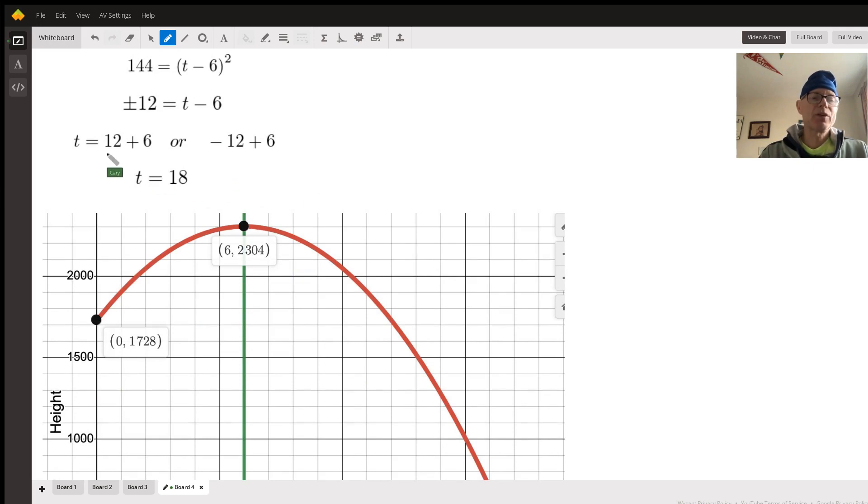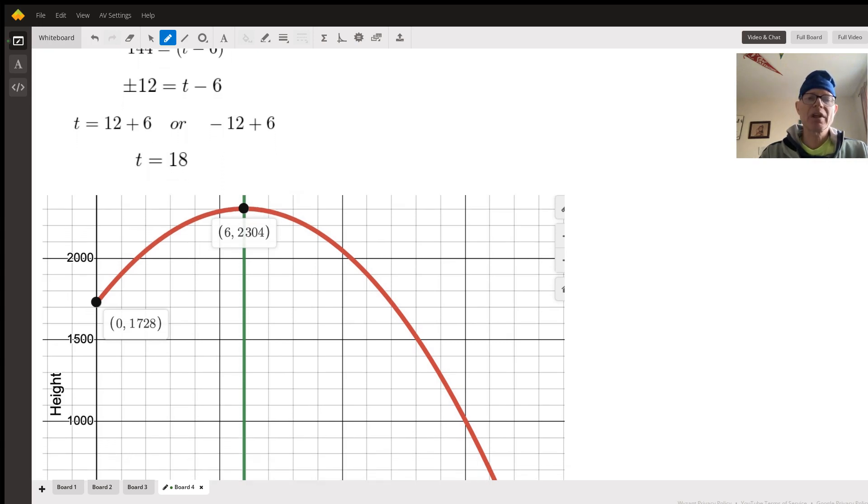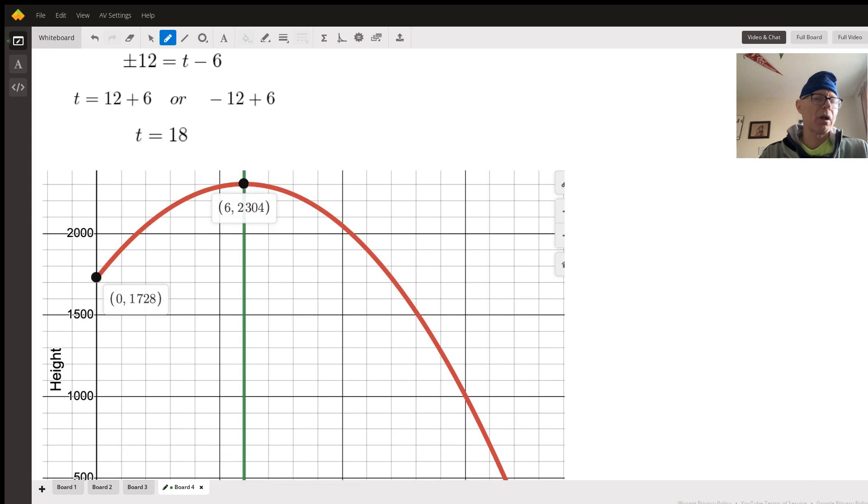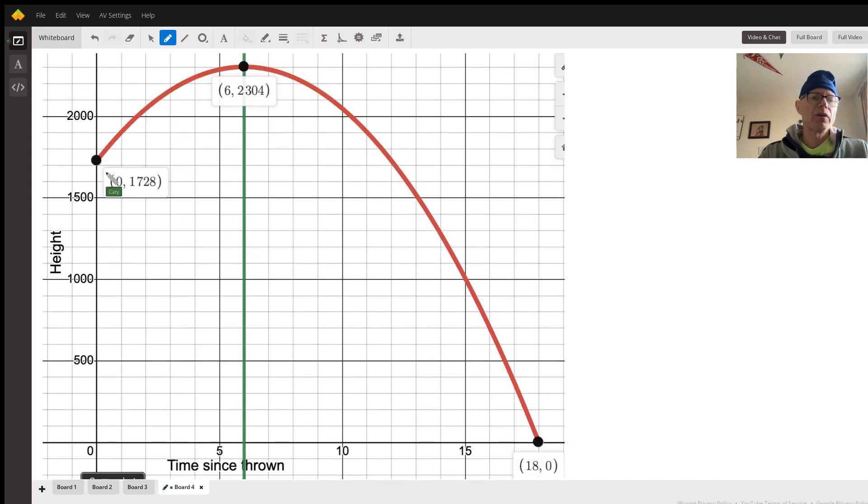And if we add 6 to positive 12, we get 18. And if we add 6 to negative 12, that's going to be a negative result, which doesn't make any sense, because that's talking about 6 seconds before we threw the ball. And this function really only applies to the position of the ball with respect to time after it's been thrown or the instant that it's been let go.